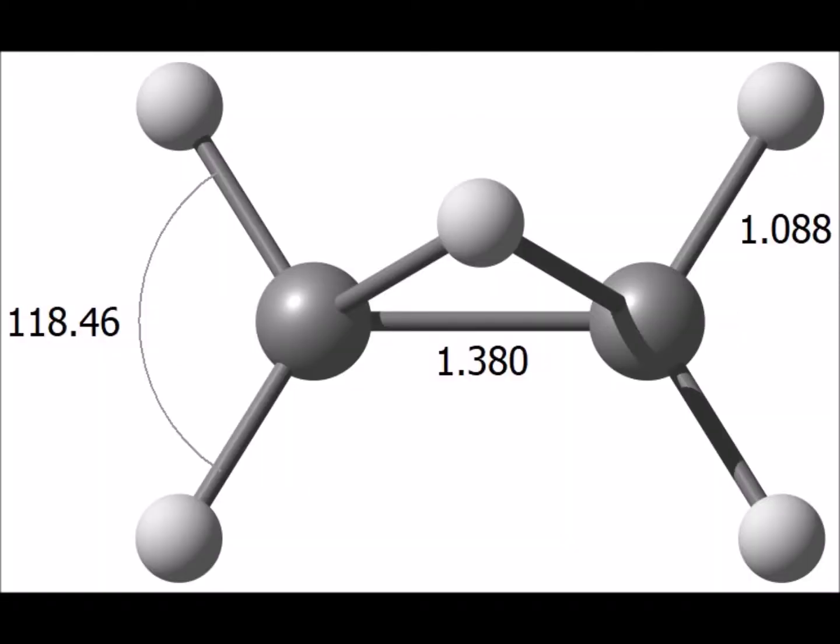Here is ethyl carbocation in the gas phase, and we notice that each of the carbons is sp2 hybridized with a nearly trigonal planar configuration. But the two carbon atoms are also joined by a bridging hydrogen that is not in the same plane as the other atoms in the carbocation.